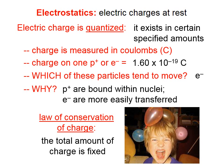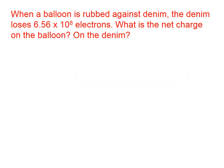When a balloon is rubbed against denim, the denim loses 6.56 times 10 to the 8th electrons. What is the net charge on the balloon and on the denim?